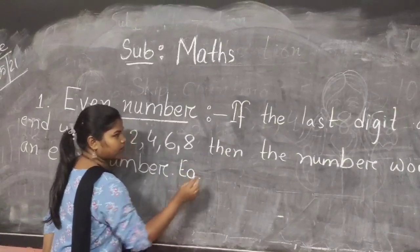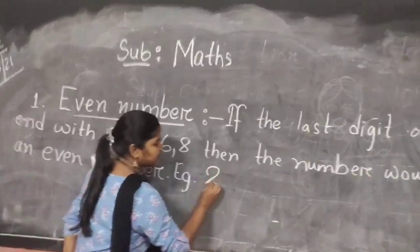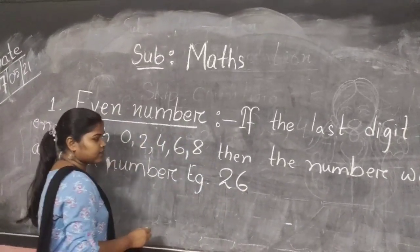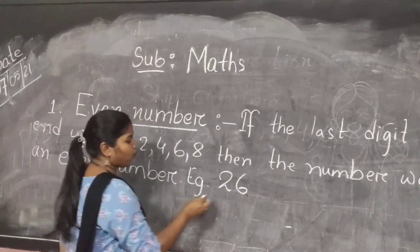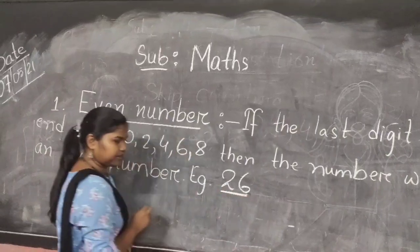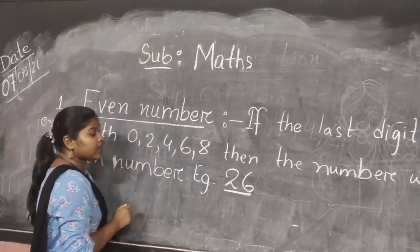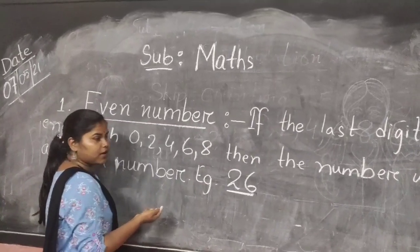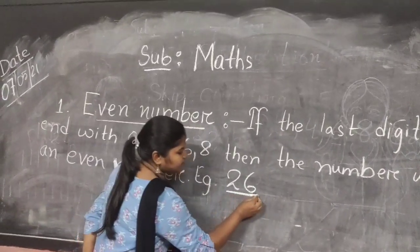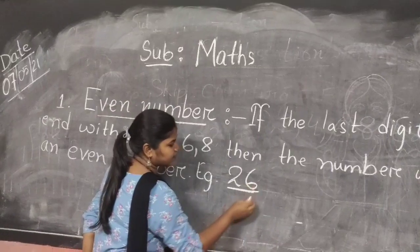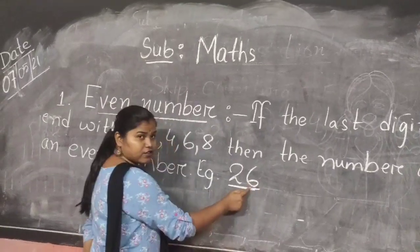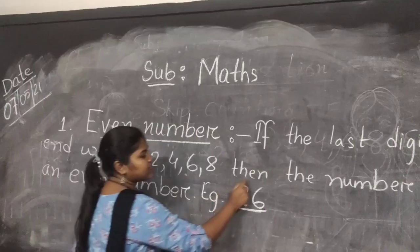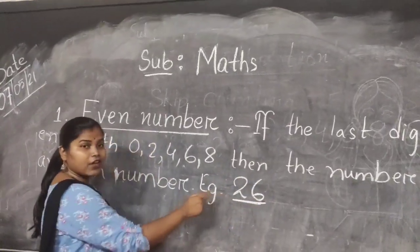For example, 26. Now, you tell me what number is this? This is an event number. Now, how is it an event number? Because the last visit ends with 6. So, this number is an event number.